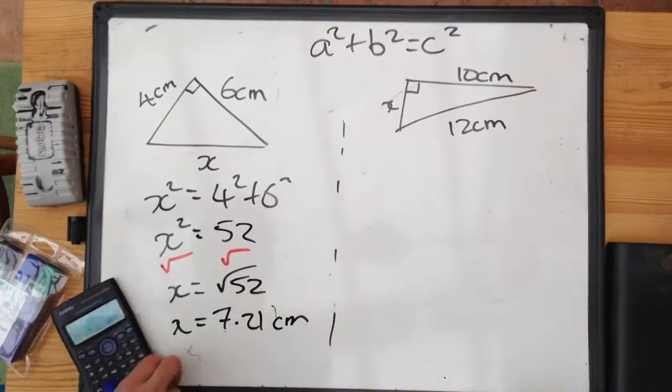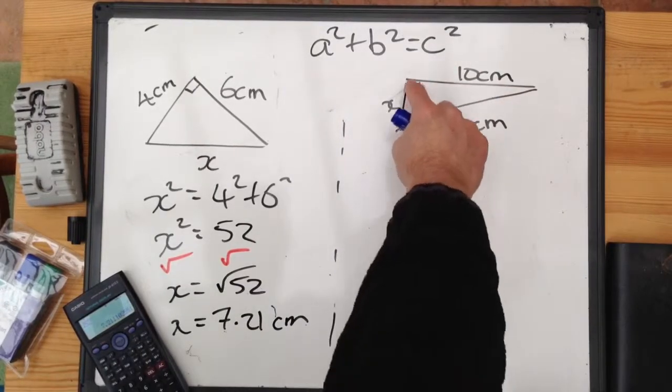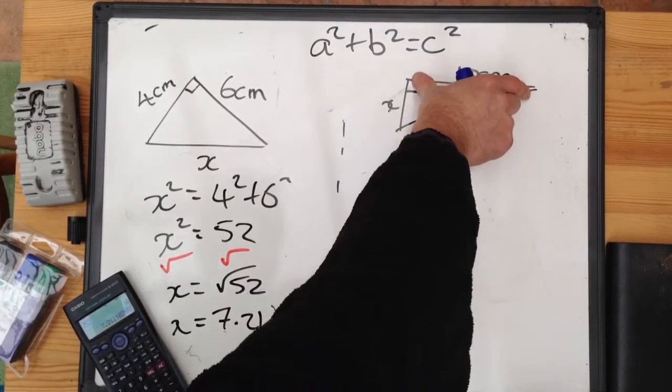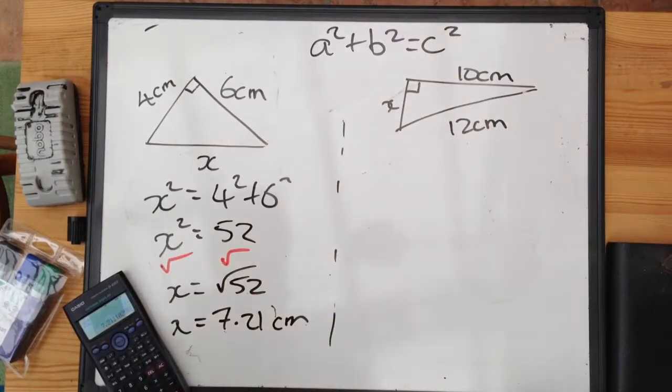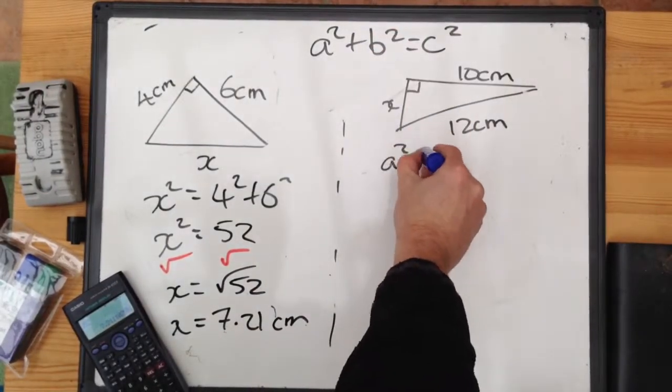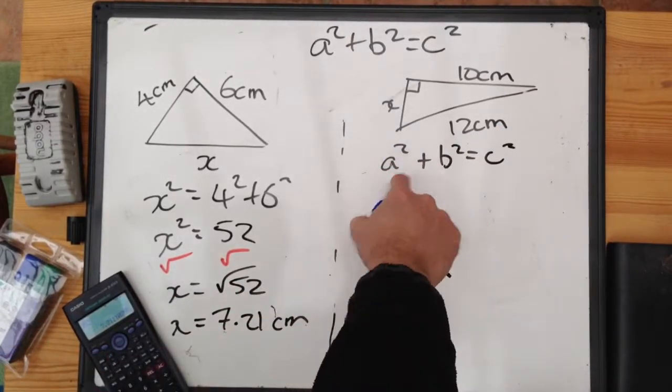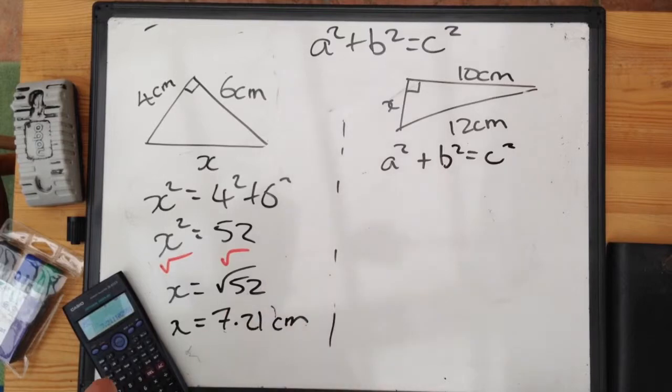However, the second example over here, I am trying to find one of the shorter sides. This is the hypotenuse. It's opposite the right angle. These two are the shorter sides. They form the right angle. So this formula doesn't work as it stands. What we need to do is rearrange it slightly so that one of these two shorter sides is the subject of the formula.